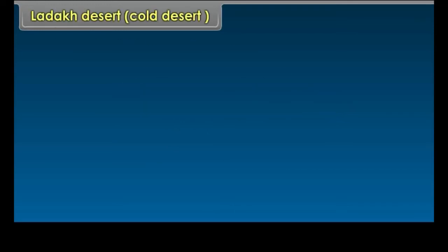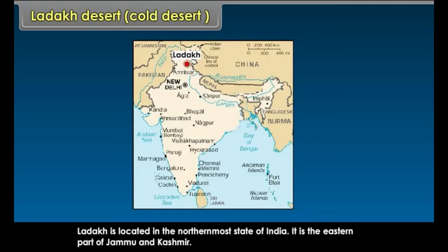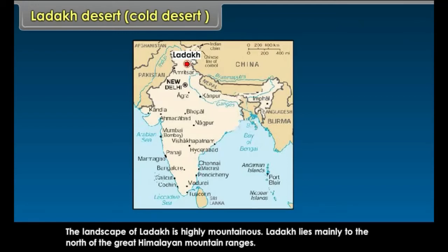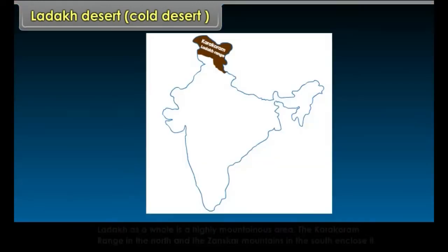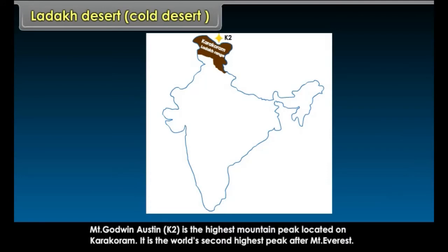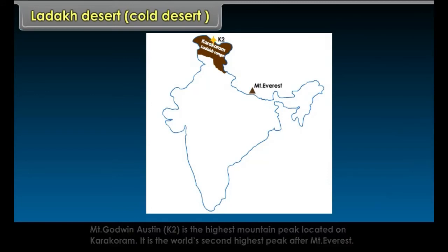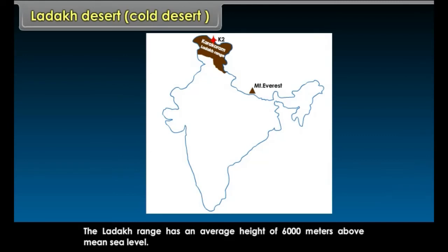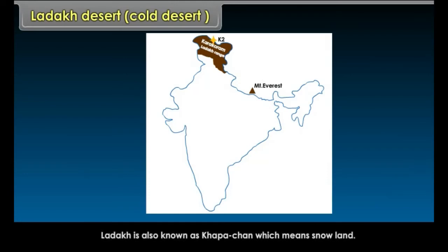Ladakh Desert — Cold Desert. Ladakh is located in the northernmost state of India, in the eastern part of Jammu and Kashmir. The landscape is highly mountainous, lying mainly to the north of the great Himalayan mountain ranges. The Karakoram range in the north and the Dzanskar mountains in the south enclose it. Mount Godwin Austen (K2) is the highest peak on the Karakoram and the world's second highest peak after Mount Everest. The Ladakh range has an average height of 6,000 meters above mean sea level. Ladakh is also known as Hapa Chan, meaning 'snow land.'